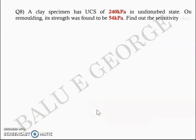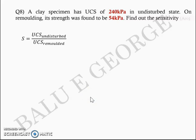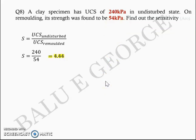Question number 8: A clay specimen has a UCS of 240 kPa in undisturbed state, and on remoulding, its strength was found to be 54 kPa. You are asked to find the sensitivity. Sensitivity is defined as the ratio of undisturbed strength to remoulded strength. The undisturbed UCS is 240 and the remoulded strength is 54. So sensitivity equals 240 / 54 = 4.44. A very direct application of sensitivity.